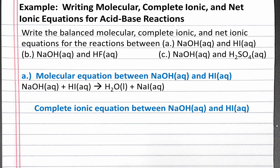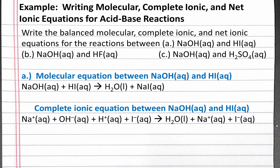Next, we'll write the complete ionic equation for this reaction by splitting apart strong electrolytes. Both sodium hydroxide and hydroiodic acid are strong electrolytes — hydroiodic acid is a strong acid. So we'll split apart sodium hydroxide, hydroiodic acid, and the soluble salt sodium iodide. We do not split apart H₂O because it is not a strong electrolyte.